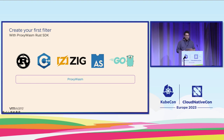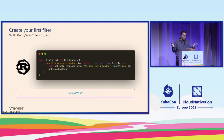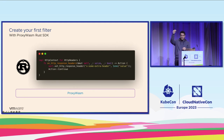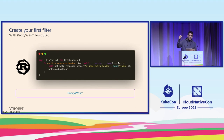Everything beneath is Proxy Wasm in this case. If we take, for example, the Rust code, it's very simple. The important takeaway is that we have a function defined by the SDK — and ultimately by the ABI — called on HTTP response headers. As Angel was saying before, this sits in the middle: it gets requests and is also able to intercept the response and adapt it. In this case, we are intercepting the response headers and we are able to add a new header to the response.